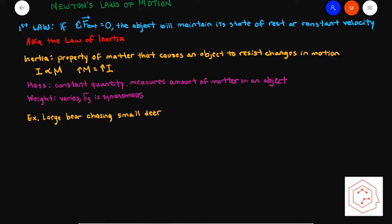Before moving on to Newton's second law, let me give you a quick example of inertia. Suppose a large bear is chasing a small deer. Which animal has the larger mass? Obviously the bear, which means he also has more inertia. So what would give the deer the best chance of escaping? Since the smaller deer has less mass and thus less inertia,